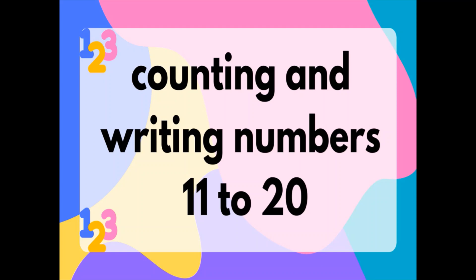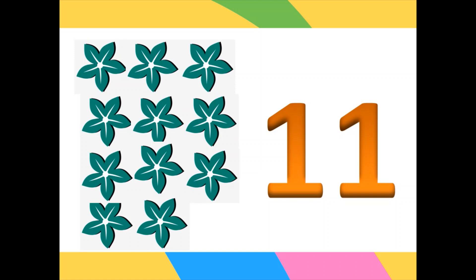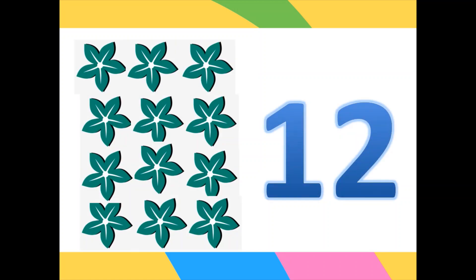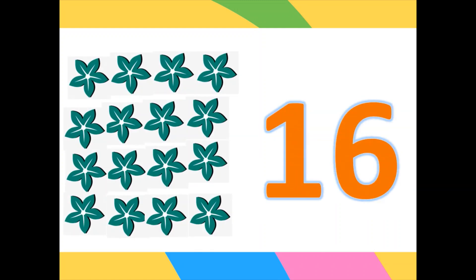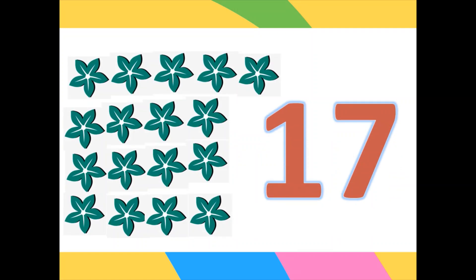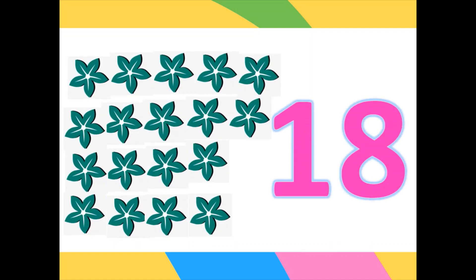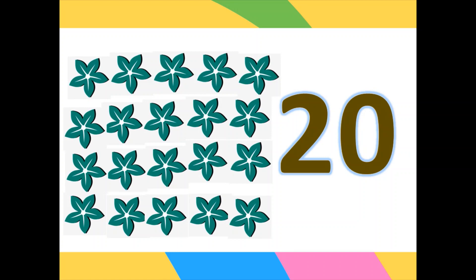Now let's continue counting and writing numbers 11 to 20. Let's count once again from 11 to 20. We have 11 flowers. 11, 12, 13, 14, 15, 16, 17, 18, 19, 20. Wow! So you know now how to count numbers 11 to 20.